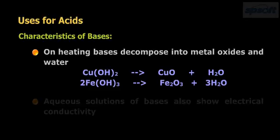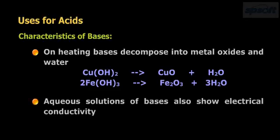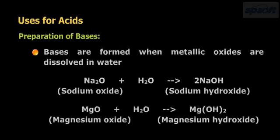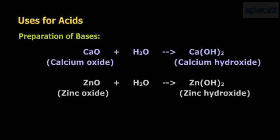Aqueous solutions of bases also show electrical conductivity. Preparation of bases: Bases are formed when metallic oxides are dissolved in water. Na2O (sodium oxide) + H2O gives 2NaOH, sodium hydroxide. MgO (magnesium oxide) + H2O gives Mg(OH)2, magnesium hydroxide. CaO (calcium oxide) + H2O gives Ca(OH)2, calcium hydroxide.